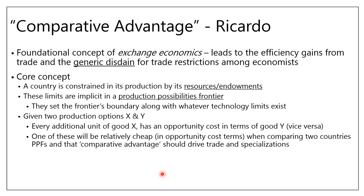Moving beyond absolute advantage, we have to think about comparative advantage — the real crux of trade theory. It's not just what you make cheaply, but given national resource constraints in labor, land, and capital, what choices will you make? This concept, owed to Ricardo — though Adam Smith's Wealth of Nations (1776) is often cited — is more precisely an economics-based proof by Ricardo. It says in exchange economics, comparative advantage is what leads to efficiency gains or income gains from trade, and it's a guaranteed result under easy-to-see conditions.